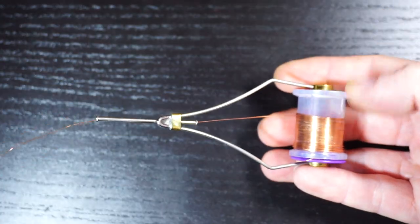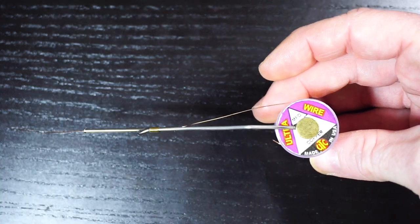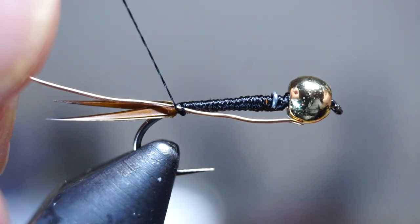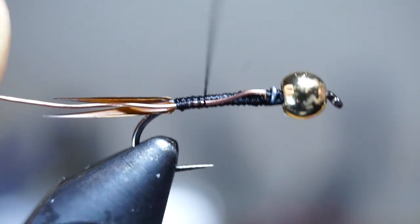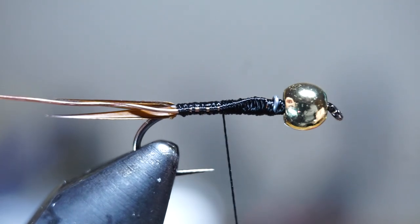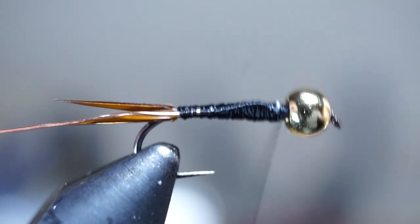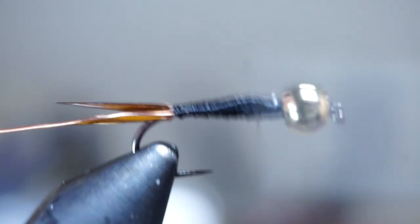Now we need some copper wire. For this size fly I am using medium, but adjust your wire size according to your fly size. Tie in the wire on the side of the fly and make sure the tip doesn't extend past the lead bump. Now build a taper to this fly with your thread. Go up to the bead and then half way down, then back up to the bead again and down a little more. Keep repeating this until you form a full but smooth taper on the fly.